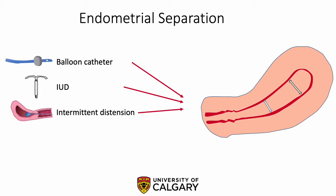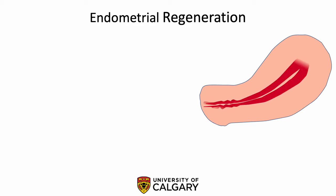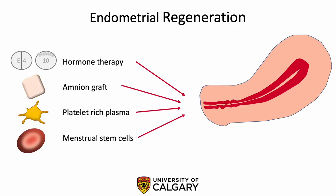A fourth method, which has increasing evidence, is placement of an adhesion barrier, most commonly hyaluronic acid gel, which is not readily available in Canada at this time. The second important principle is endometrial regeneration. Because the basalis layer has often been destroyed, regeneration of the endometrium can be challenging. The most common and our preferred approach is hormone therapy with an extended treatment of estrogen followed by progesterone. The use of postoperative amniotic grafts has also been described. Two newer approaches involve the use of platelet-rich plasma or menstrual stem cells.